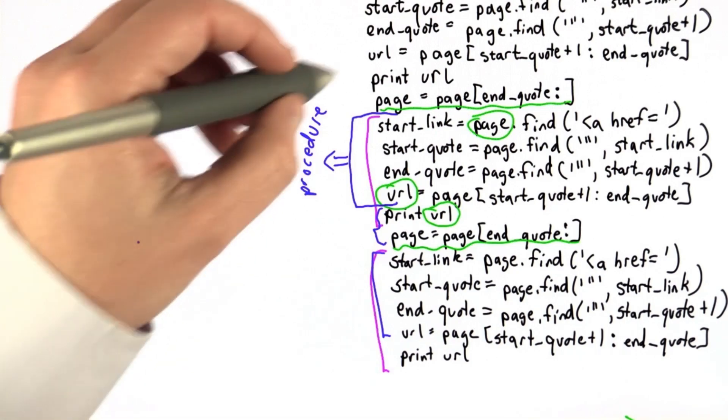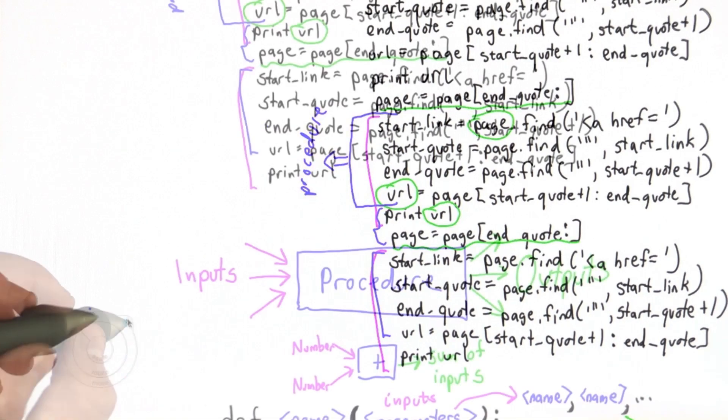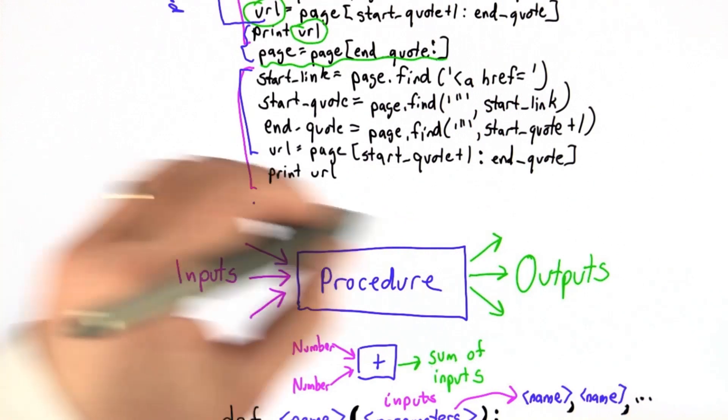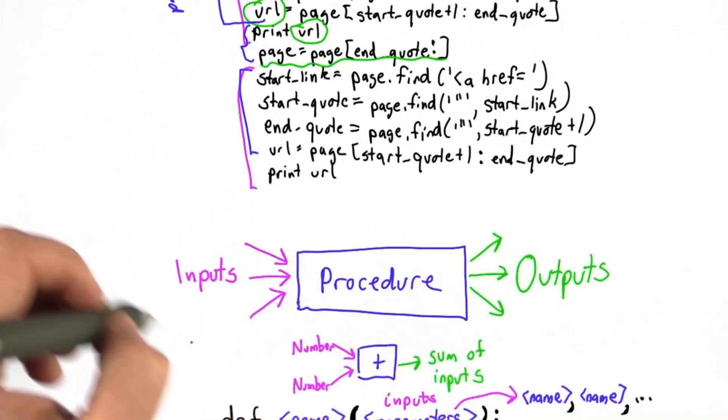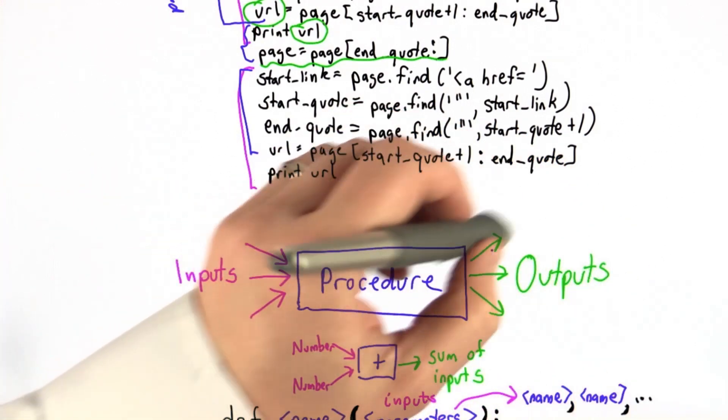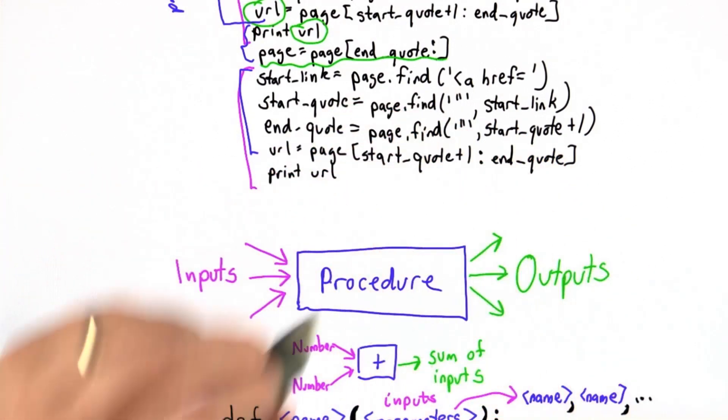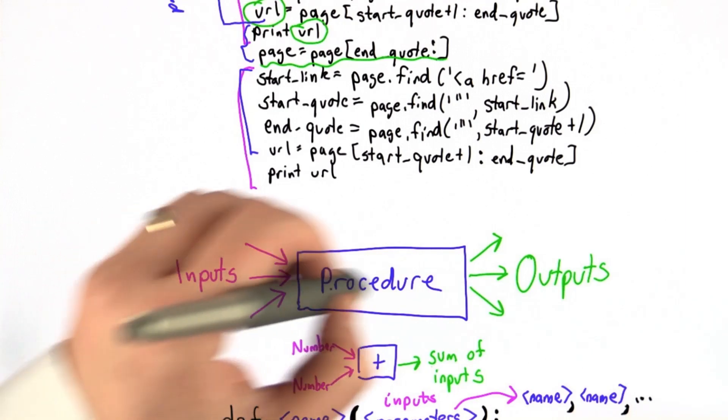When we think about making a procedure, the first thing we always want to do is make sure we understand the inputs and outputs. If we don't understand the inputs and outputs, there's no hope of writing the procedure correctly, since the main purpose of the procedure is to map the inputs into the outputs.